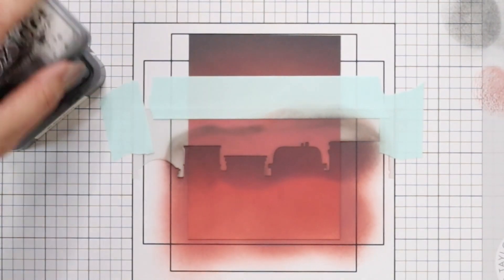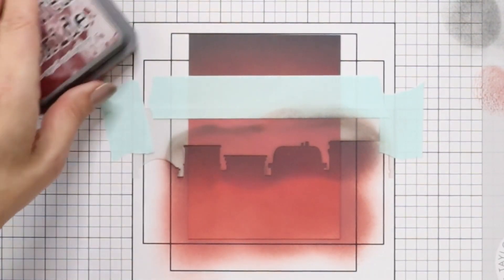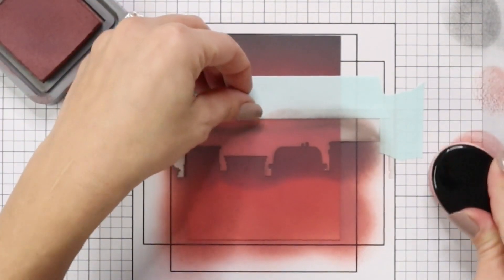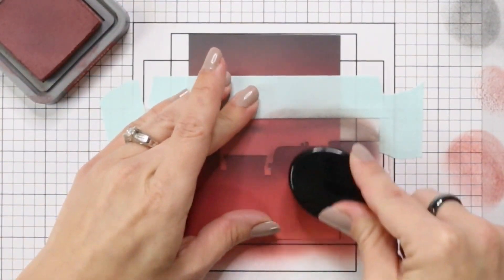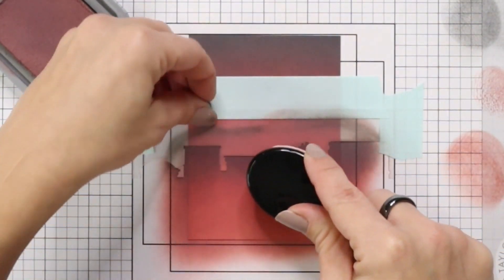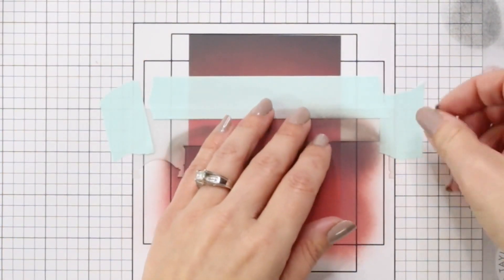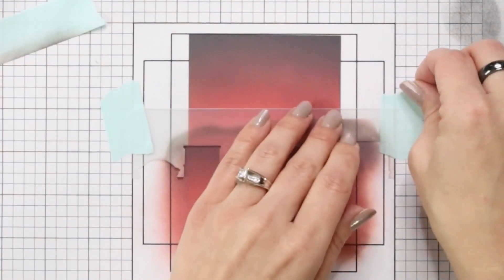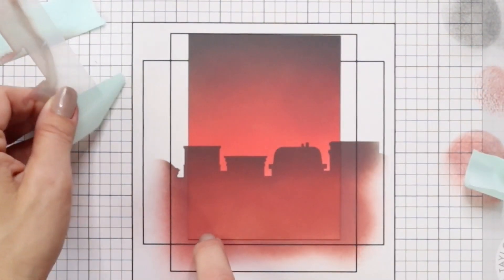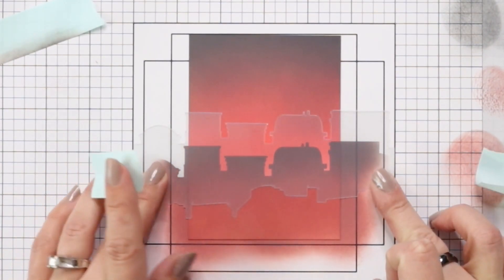So once I have that done and I have that blended nicely, I'll bring in my aged mahogany and you can see I'm just going right back over that. The more color I add to this the darker it's going to be which looks really amazing on my ink blended background so that I'm just carefully removing that low tack tape for that great silhouette image.